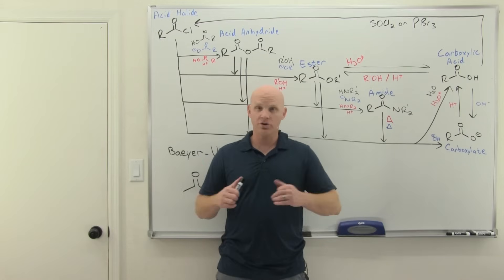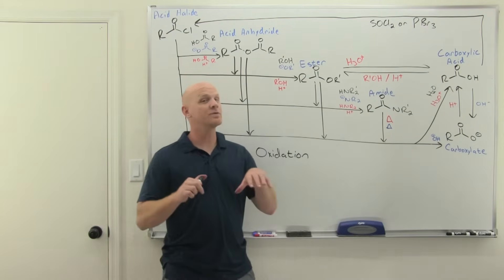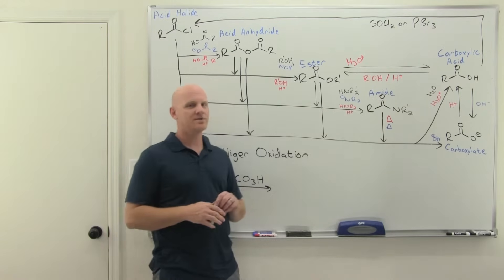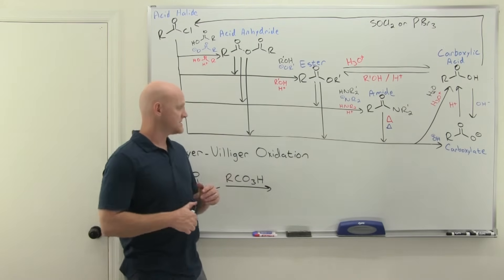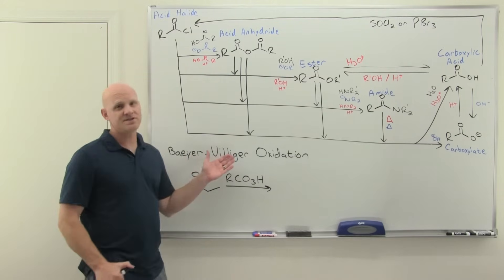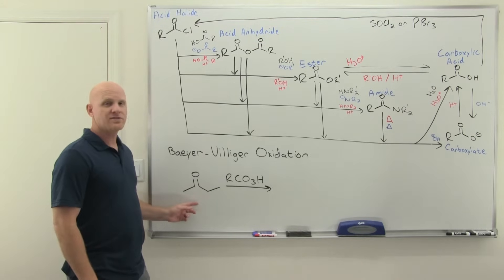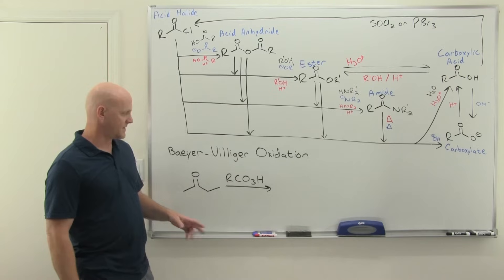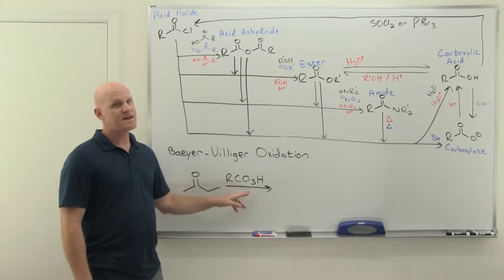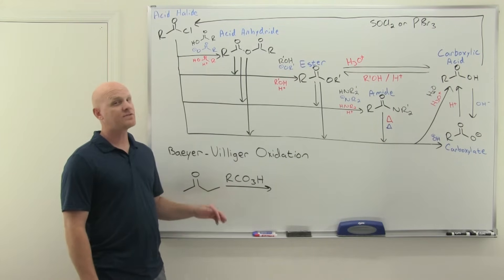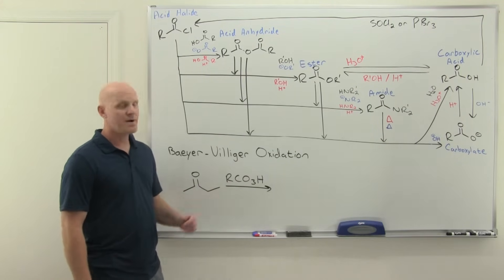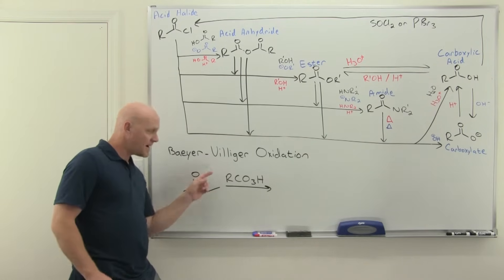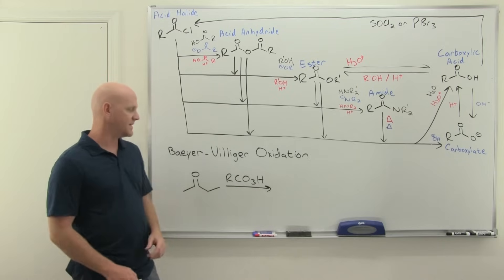We're not actually going to start with anything from this chapter. We're going to start with a reaction we learned in the last chapter on ketones and aldehydes — the Baeyer-Villiger oxidation. The Baeyer-Villiger oxidation oxidizes a ketone to the corresponding ester, and the reagent of choice is a peroxyacid, or peracid for short. MCPBA was the most famous one.